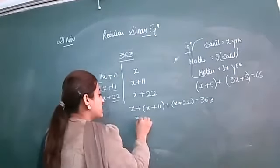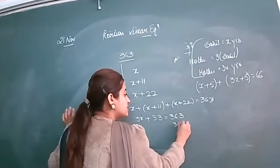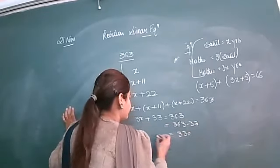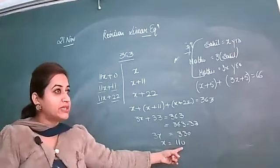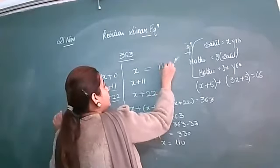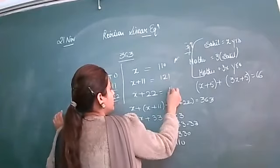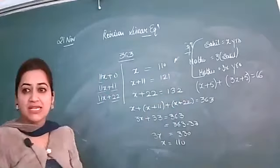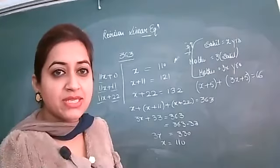3x plus 33 equals 363. Subtracting 33: 3x equals 330, so x equals 110. The three consecutive multiples of 11 are 110, 121, and 132, which give the sum 363.